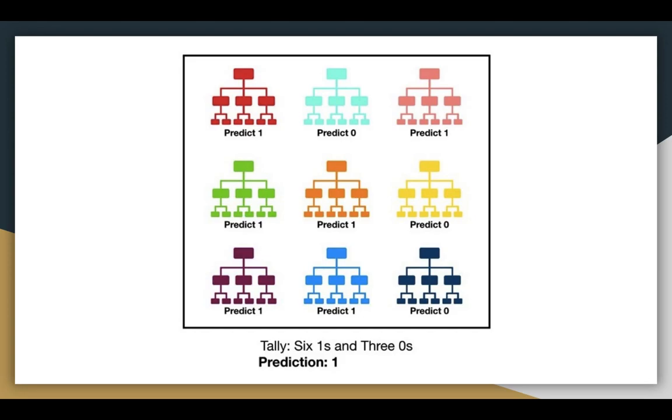In the figure, six decision trees predict one and one predicts zero. Hence, the final prediction of the classifier is one.